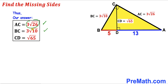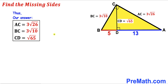Our final answers: side length BC is 3 times the square root of 10, side length CD is the square root of 65, and side length AC is 3 times the square root of 26. Thanks for watching and please don't forget to subscribe to my channel for more exciting videos. Bye!